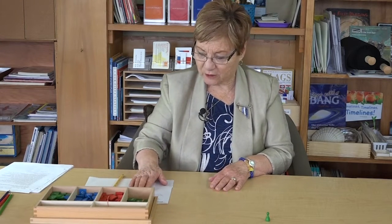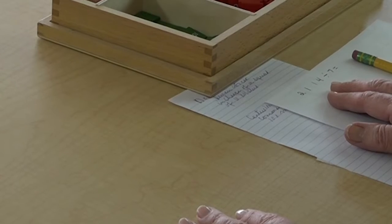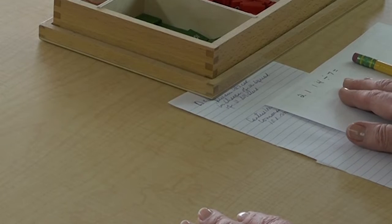The skittle represents the divisor in our problem. So I have a problem here, 2,114, that's our dividend, divided by seven, which is our divisor.